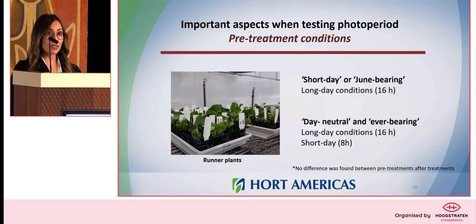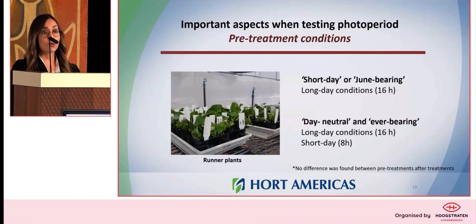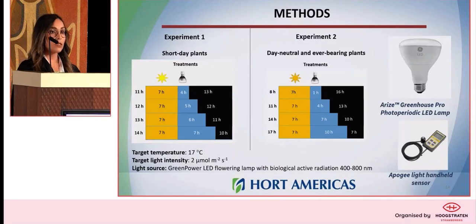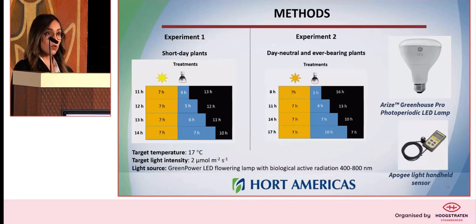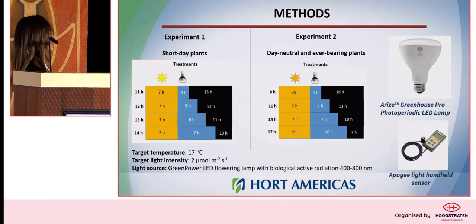It's very important to grow the plants before starting treatments under conditions that won't promote flowering. If you have short-day plants, you will grow those plants in long days. And if you have day-neutral plants, you have to grow them in either short-day or long-day conditions. Photoperiod can have an interaction with temperature and also with light, so it's very important to have no significant difference between treatments in terms of temperature and also DLI.